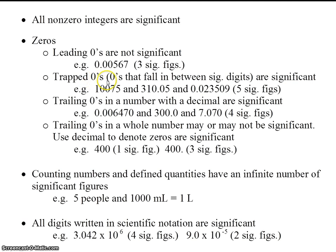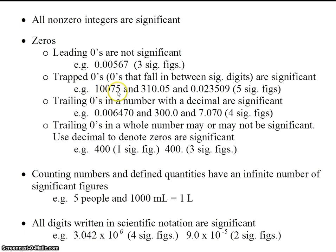Trapped zeros — just like it sounds — are zeros that fall in between significant digits, and trapped zeros are significant. Here are three examples. These would be trapped zeros, these two zeros would be trapped zeros, and this here is a trapped zero. What type of zeros are these? That's right, these are leading zeros. Leading zeros are not significant, but trapped zeros are. So this number has 1, 2, 3, 4, 5 sig figs.